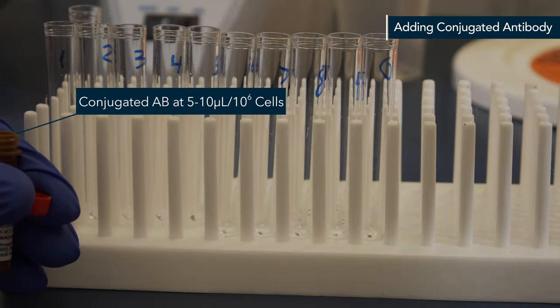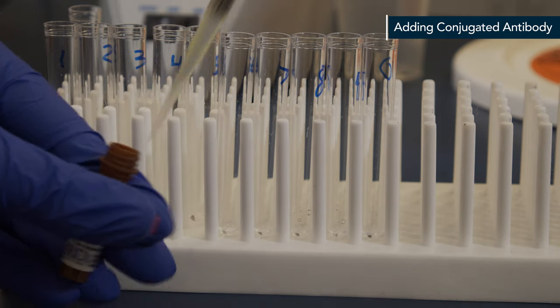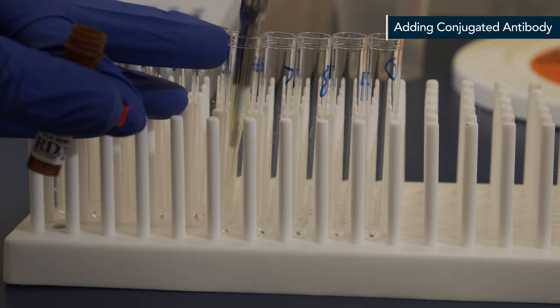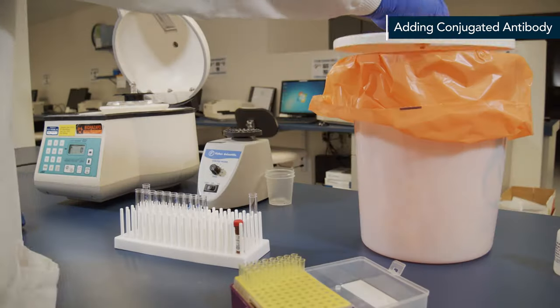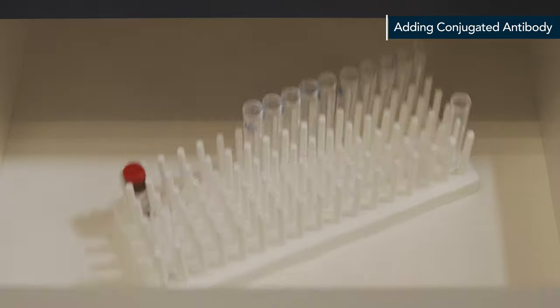Now add conjugated antibody, concentrated at 5 to 10 microliters per million cells or a previously titrated amount and vortex. Incubate the cells for 30 minutes at room temperature in the dark.